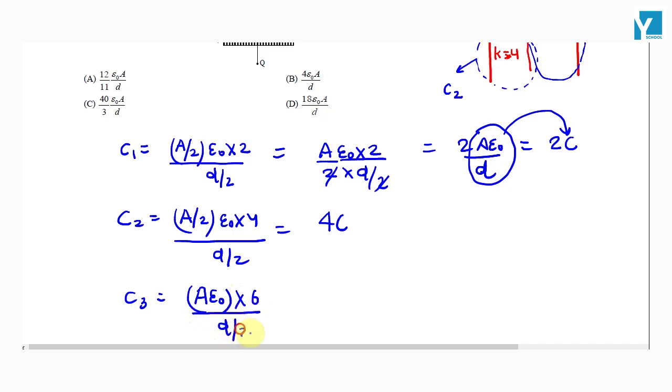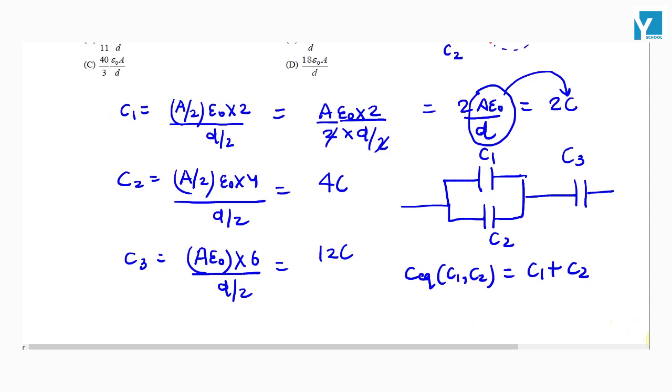So capacitors C1 and C2, the equivalent will be C1 plus C2 which is 6 times C.